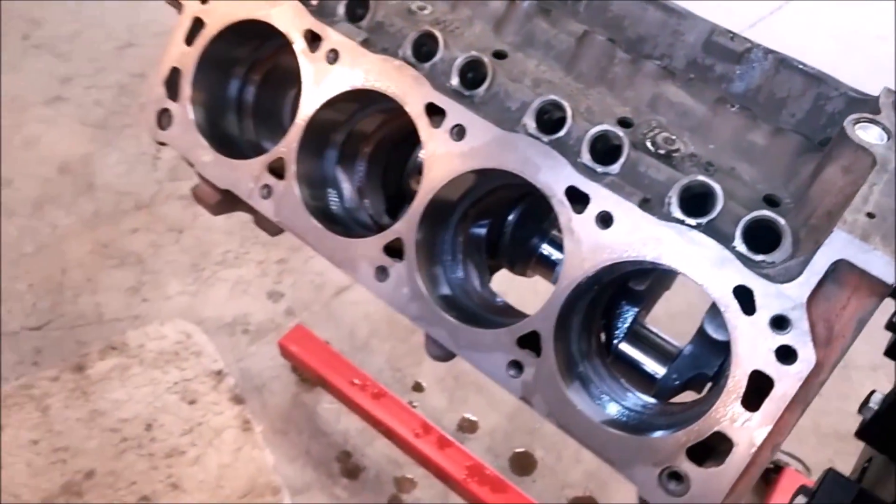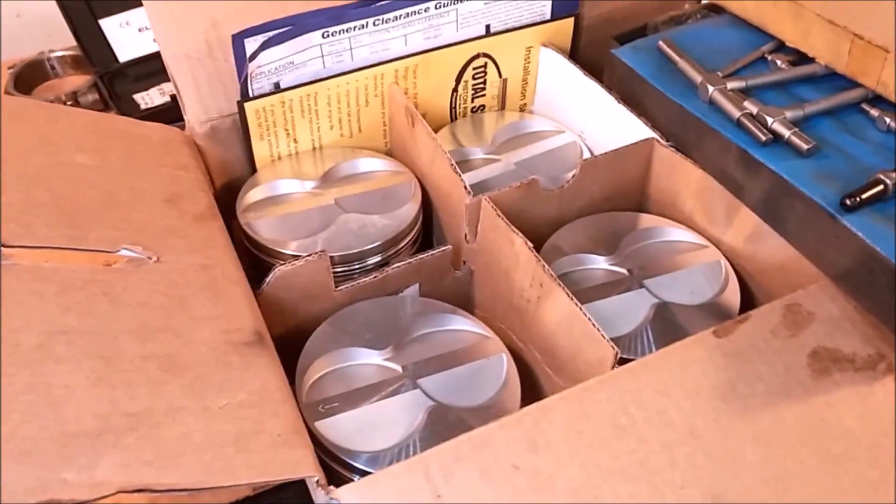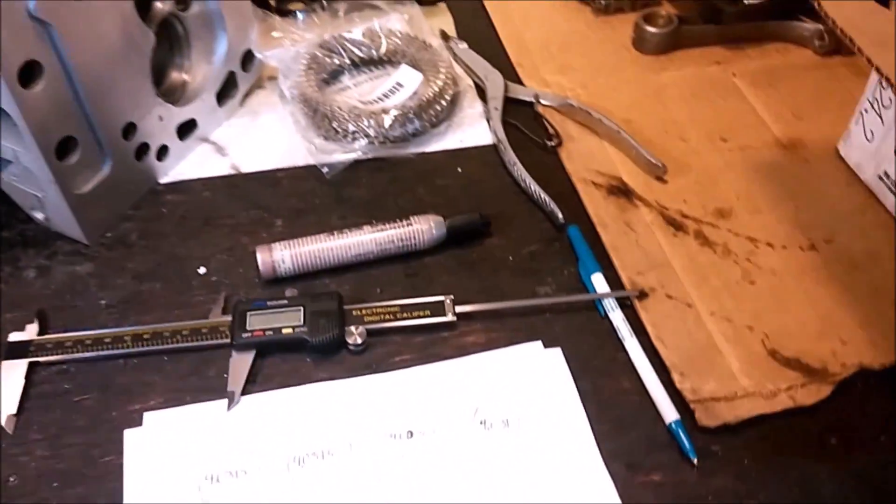So we keep those matched, and then we also want to match the pistons to the respective bores in case some of the bores are half to one thousandth difference. So we'll measure these pistons and also measure the bores.